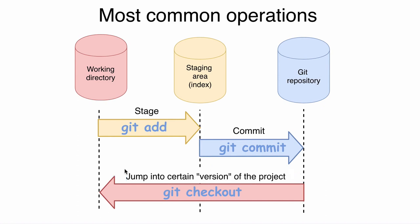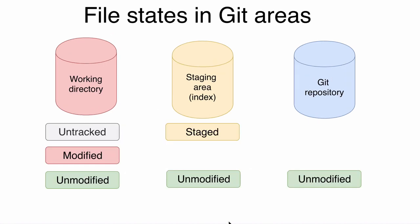After checking out a specific version of your project, you can easily move on and make changes — add new files, commit those changes, and so on. That's what we will do in the next section. But before moving on, let me also show you this diagram and explain how different file states relate to different git areas. Again, there are three areas: working directory, staging area or index, and git repository.